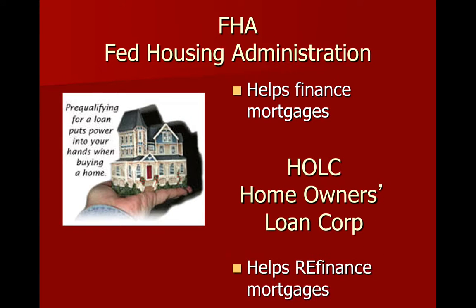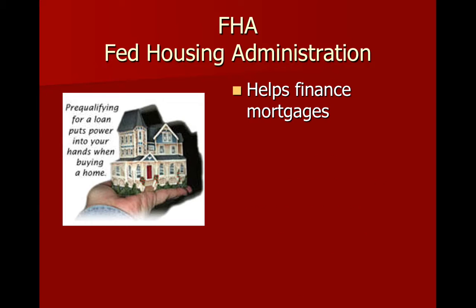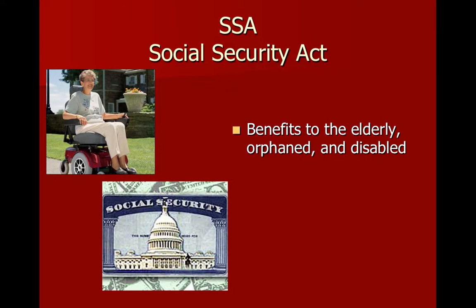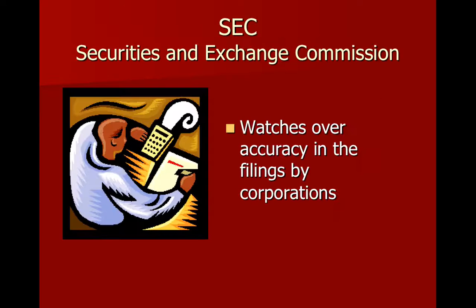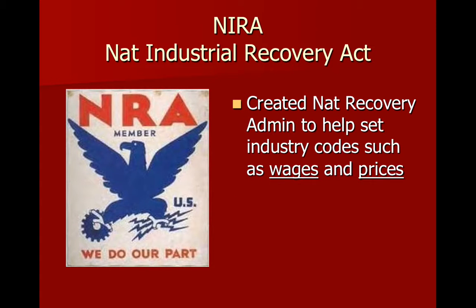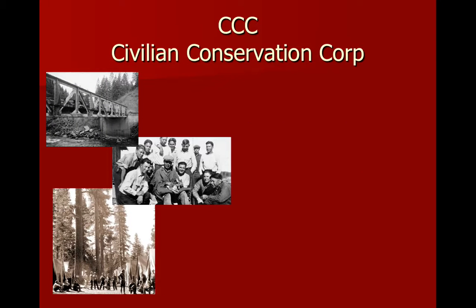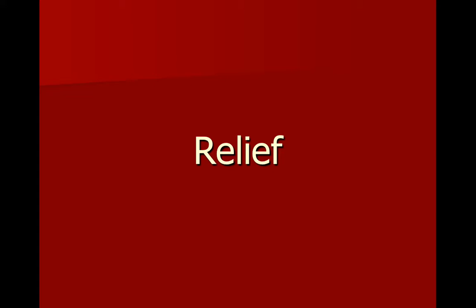I'm flying through these because we're close to 26 minutes. I think it's fair that I talk more about HOLC, FHA, and the Wagner Act, which created the National Labor Relations Board, in class. What I did today is introduce, and for some of these went over in detail, a bunch of New Deal agencies. A lot of them are known by their acronyms, and I'd encourage you to start learning those acronyms now. Then what we're going to do is try to put them all together to see what worked, what was a risk, what failed, and how it's changed the United States and its dealings with the economy today.